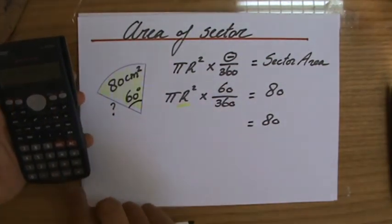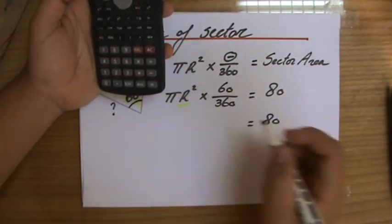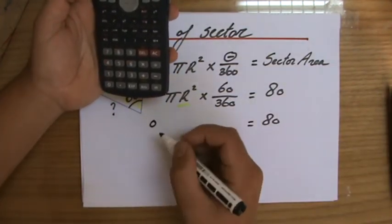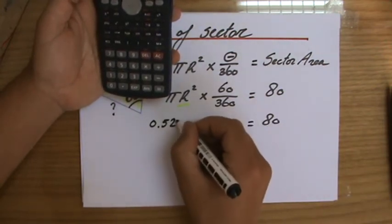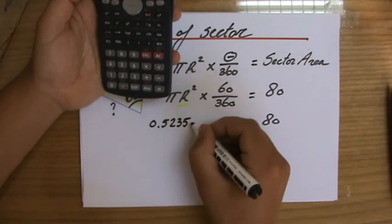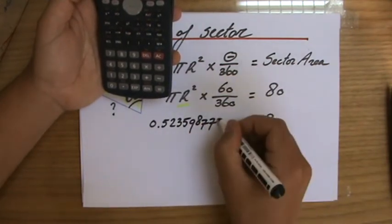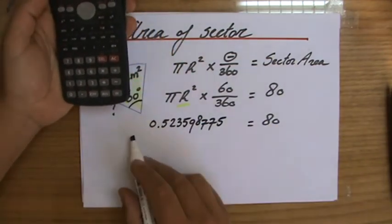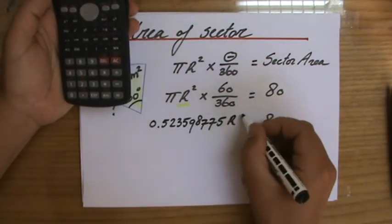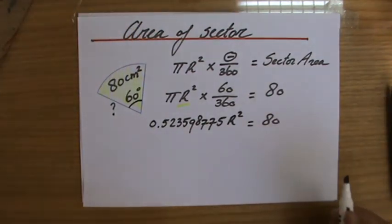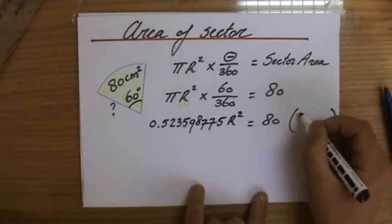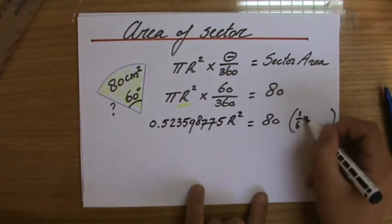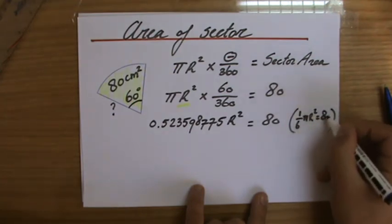So let's do this multiplication - 60 out of 360 or 1 over 6 times π. Let's write down all those decimals: 0.523598775. If you give it like this you have to write down all the decimals, and we still have r² there as well and that should equal 80. Perhaps you could also have said a sixth of πr² equals 80, then you don't have to write down all those decimals.